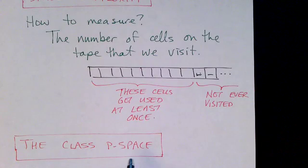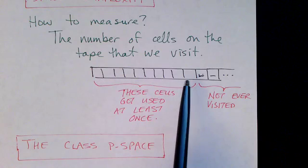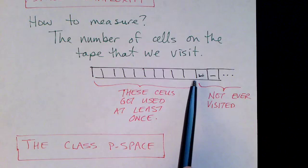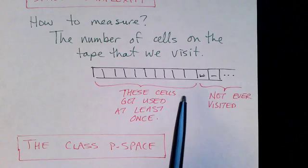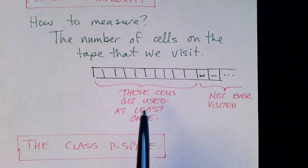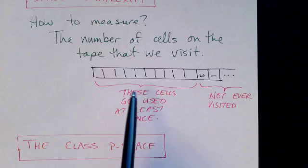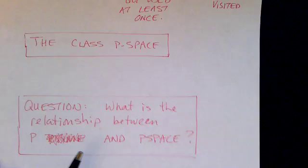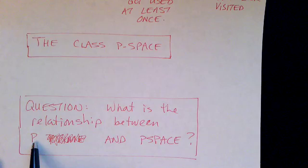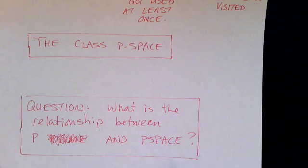And we can define the class P-SPACE as the set of algorithms that visit a polynomial number of cells. The length of the input is n, so a polynomial as a function of the length of the input. We can define the class of P-SPACE as a set of algorithms that visit only a polynomial number of cells of the tape. And then we can ask the question: what is the relationship between P—these are the problems that can be executed in polynomial time—and P-SPACE, the problems that visit a polynomial number of cells in the tape?